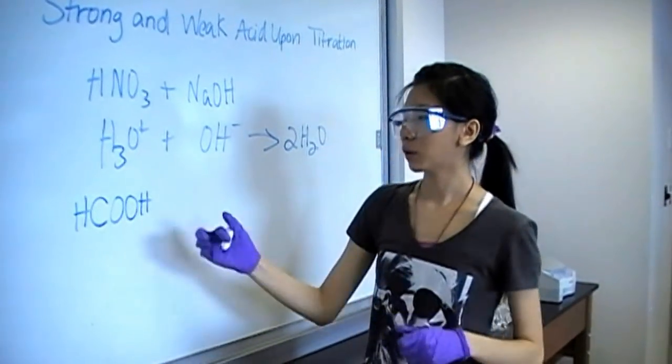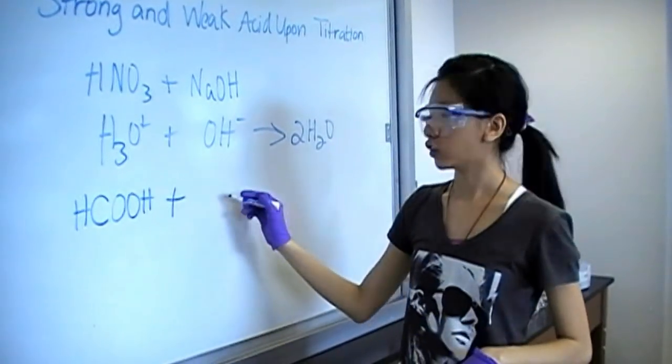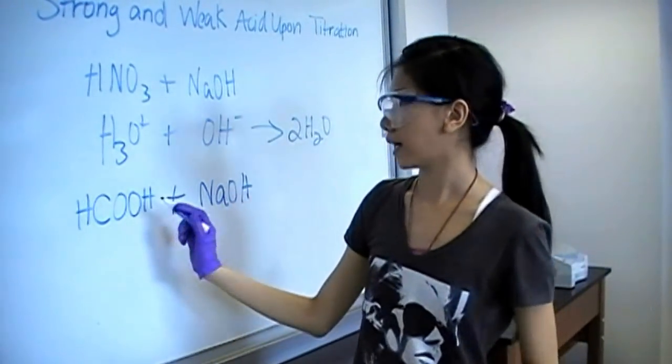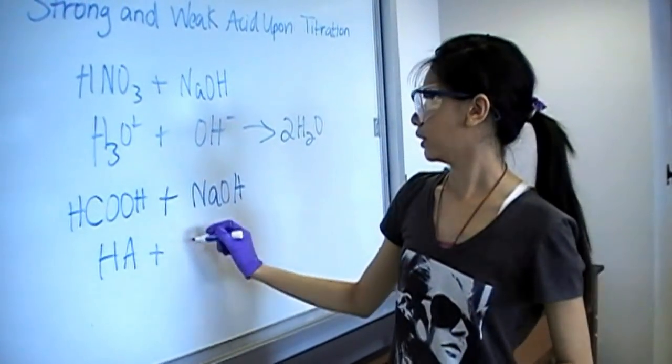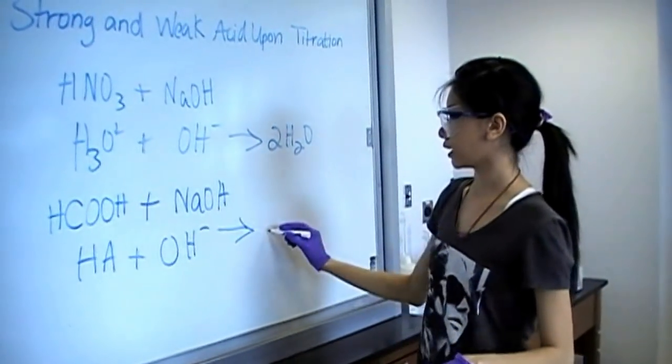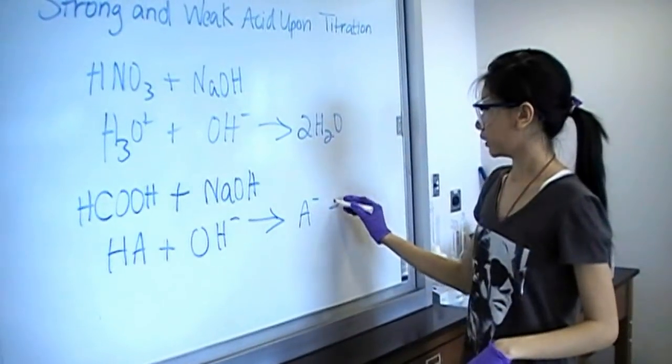We'll also have formic acid, and we'll be titrating that with sodium hydroxide, our strong base. We can also write this as weak acid plus strong base, which will completely react to form conjugate weak base plus water.